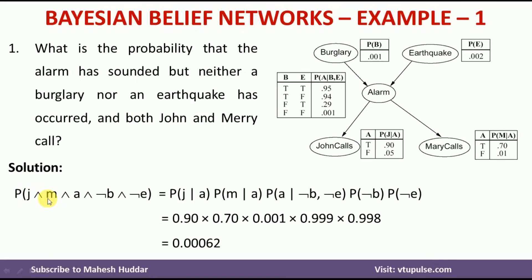The probability that John has called, Mary has called, there is an alarm, but no burglar and no earthquake is calculated as follows. The probability of John calling depends on alarm, so it is P(J|A). P(M) depends on alarm, so it is P(M|A). Alarm depends on burglary and earthquake, so we use P(A|¬B, ¬E) since the problem states no burglar and no earthquake. Burglary and earthquake do not depend on anything, so we use P(¬B) × P(¬E). Substituting all values from the table, we get the answer as 0.00062. This is the joint probability distribution when all events are given.